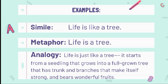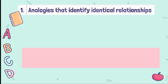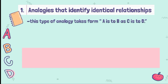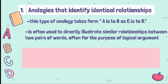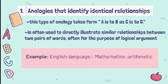Generally, there are two types of analogy commonly employed in writing. The first type is analogies that identify identical relationships. This type takes the form of 'A is to B as C is to D.' It is often used to directly illustrate similar relationships between two pairs of words for the purpose of logical argument. Example: 'English is to language as mathematics is to arithmetic.' This vividly shows the connections — English focuses on language while mathematics deals primarily with arithmetic or numbers.